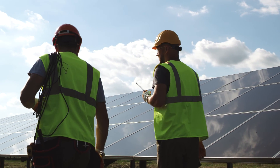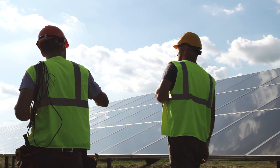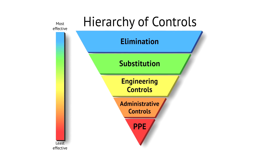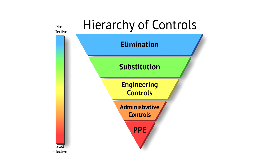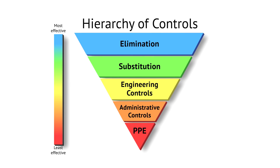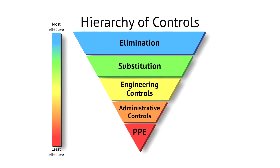The hierarchy of controls represents to the employer what they need to do to reduce, eliminate, or control a hazard. It is a framework made up of five categories: elimination, substitution, engineering controls, administrative controls, and personal protective equipment (PPE) — all ranked from most to least effective.